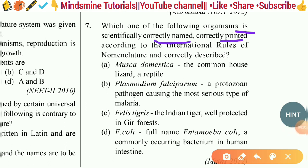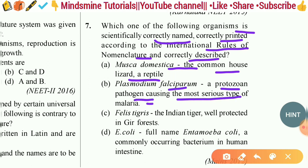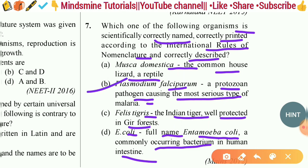Question seven: Which of the following organisms is correctly named, correctly printed according to international rules of nomenclature, and correctly described? Options include Musca domestica (common house lizard), Plasmodium falciparum (a protozoan pathogen causing the most serious type of malaria), Panthera tigris (the Indian tiger), and E. coli (a bacterium in human intestine). The right answer is option B — Plasmodium falciparum — as all the rules and descriptions are correctly applied here.